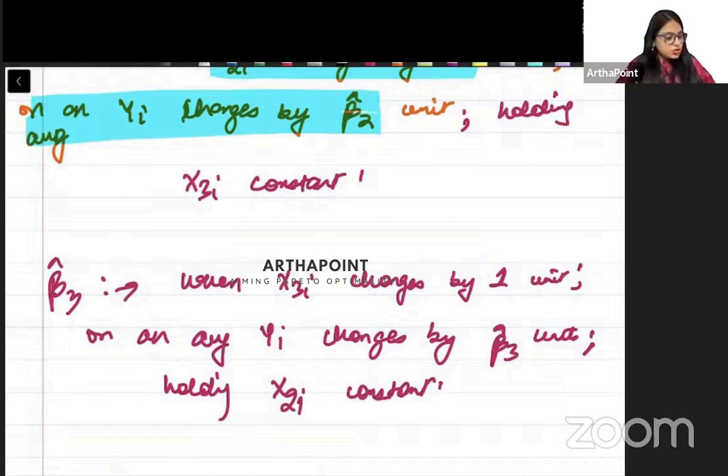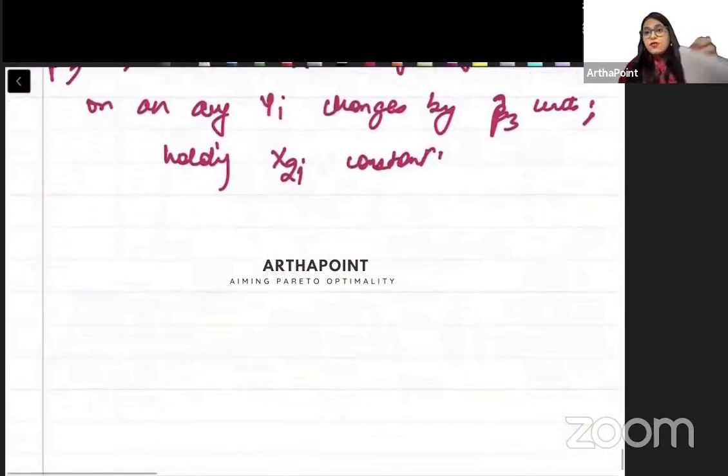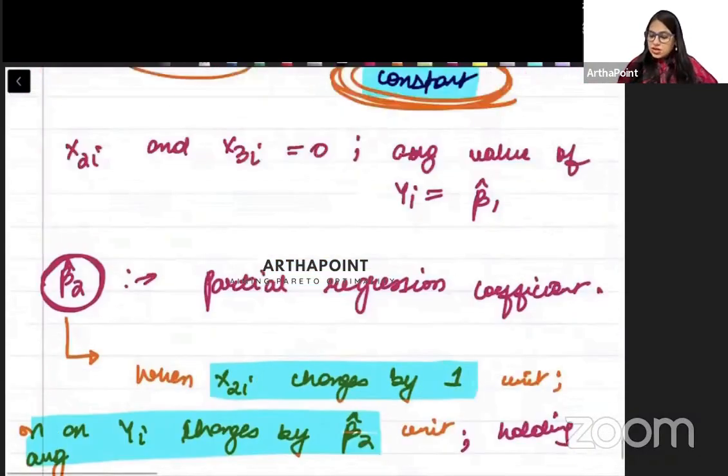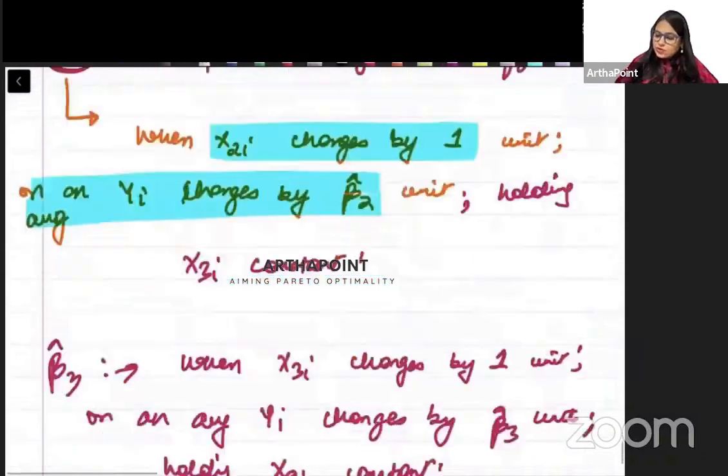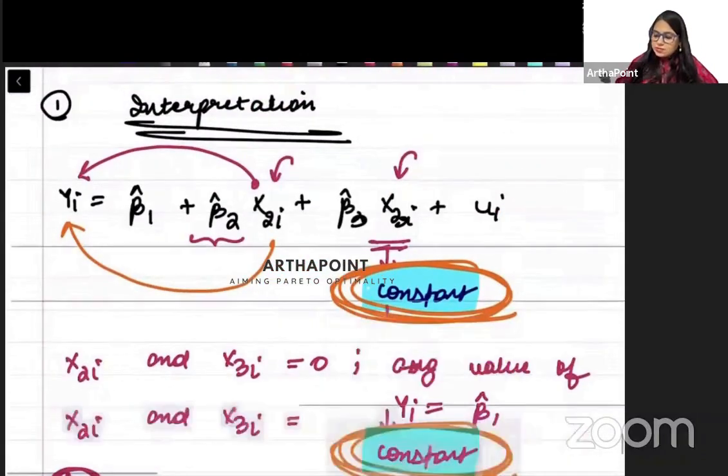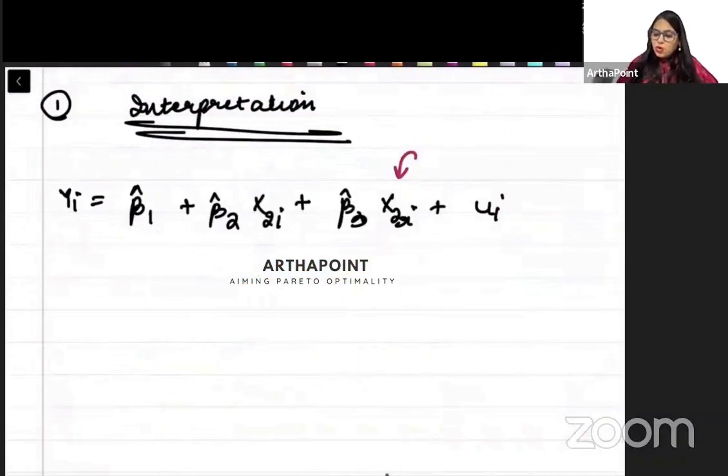Now, if this is given to you, then what are the formulas in this case for beta 1, beta 2? This is something that we need to understand. So if we talk about this regression model, in this model...